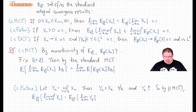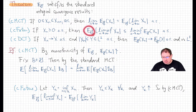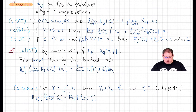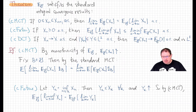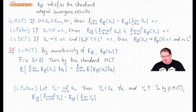The conditional Fatou's lemma says: if X_n is any sequence of non-negative random variables, then E[liminf X_n | G] ≤ liminf E[X_n | G] almost surely. The conditional dominated convergence theorem states: if X_n are L1 random variables converging almost surely to an L1 random variable X, and all X_n are dominated by a fixed L1 function Y almost surely, then E[X_n | G] converges almost surely and in L1 to E[X | G].